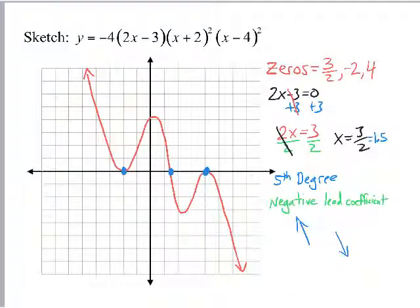Next, to get the zeros, well, you set this equal to 0 and solve it right here. You got 3 over 2, which is 1.5. What makes this 0 is negative 2, and what makes this 0 is 4. Now these squares are telling you what to do. So what happens? First of all, I put those three zeros here in blue.